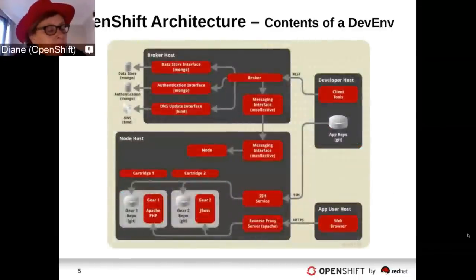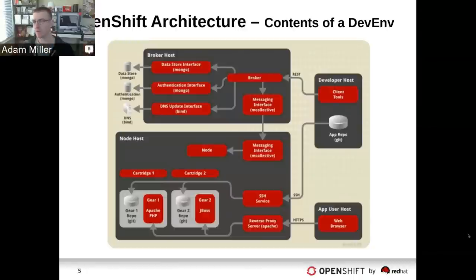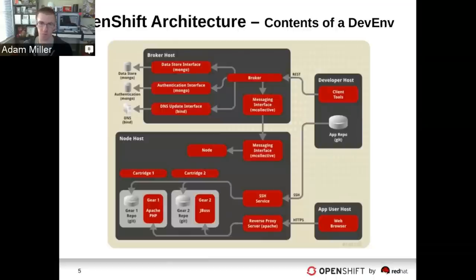I want to go over the architecture of OpenShift, because the rest of the presentation will talk about development environments, which we refer to as DevEnvs. A DevEnv is a single host — a one-machine, all-inclusive OpenShift environment running every component of OpenShift on a single virtual machine. For our purposes with online, it's run out in EC2, but it could be run anywhere.